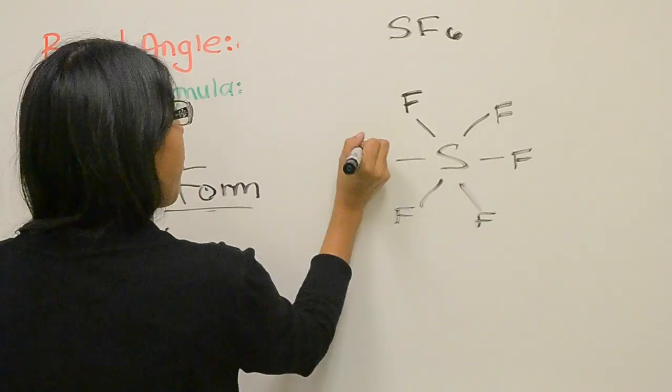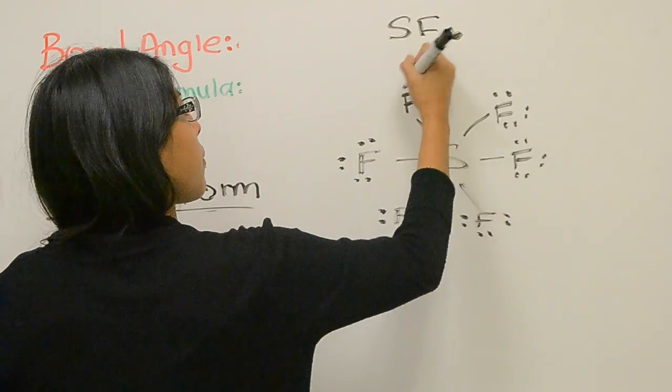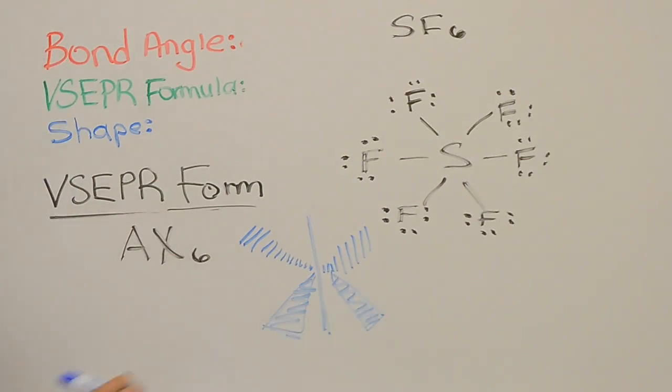Sulfur hexafluoride has a VSEPR formula of AX6, a bond angle of 90 and 180 degrees, with the shape of an octahedral.